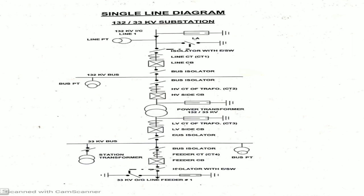Here we can see the single line diagram of 132 by 33 kV. The first one is LA, lightning arrester. Then line PT that is 132 kV line PT, isolator with earth switch, then line CT1, line breaker, bus isolator, bus PT, bus isolator, HV CT for transformer that is CT2, HV side circuit breaker.